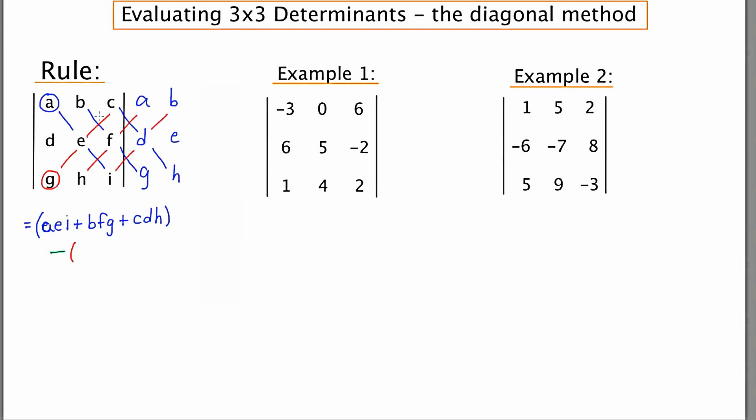And now I think maybe you can understand why the spacing of these last two rows is really important. If you smush them together or you spread them out too much, it's going to be hard to make this diagonal. So the first diagonal going upward will be G times E times C. G times E times C. And then H, F, A. And finally I, D, B.